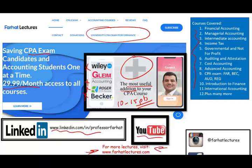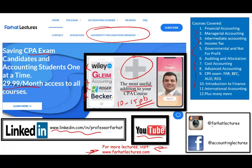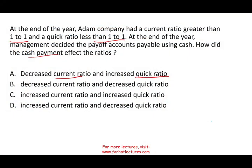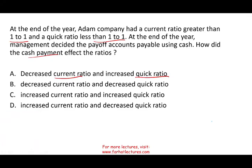Like this recording, share it with others, connect with me on Instagram and Facebook. Now let's look at this question to find out what would happen to the ratios. Atom Company — at the end of the year, had a current ratio greater than 1 to 1 and a quick ratio less than 1 to 1.